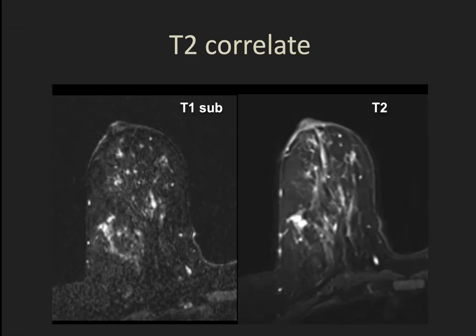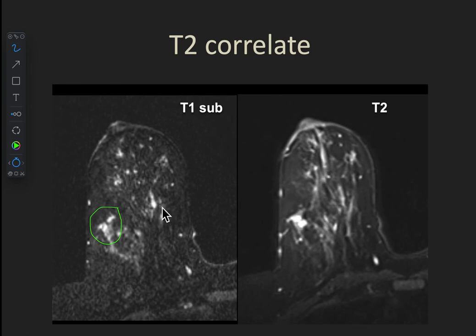What about T2 correlates? A T2 correlate is very reassuring. This patient has a little area where you might wonder about non-mass enhancement going on, with fairly extensive BPE. On the T2 image on the right, they have very intense T2 signal, so I'm going to ignore it.